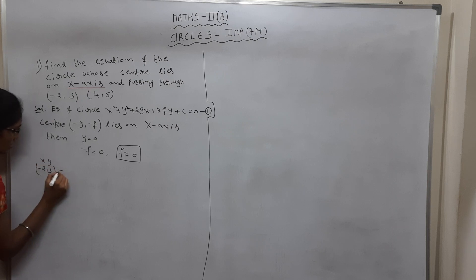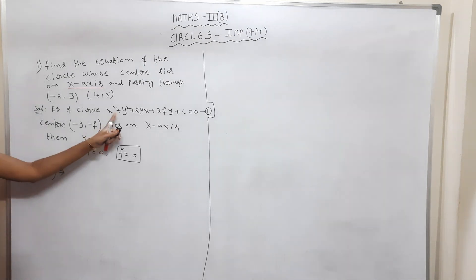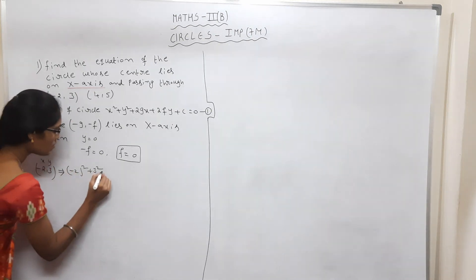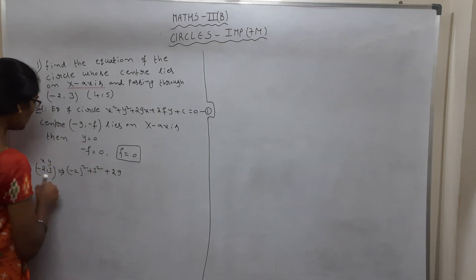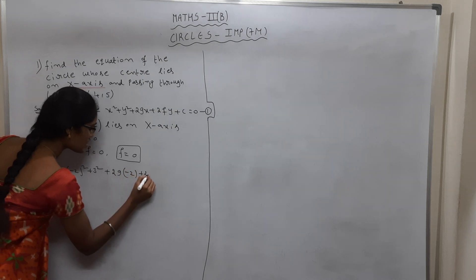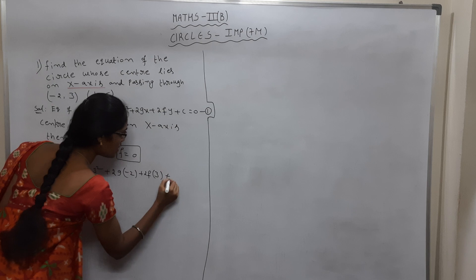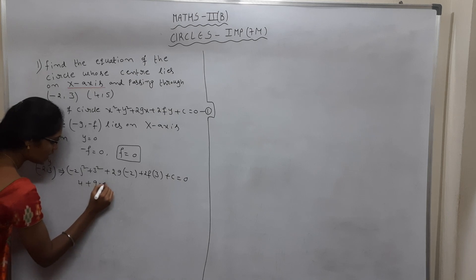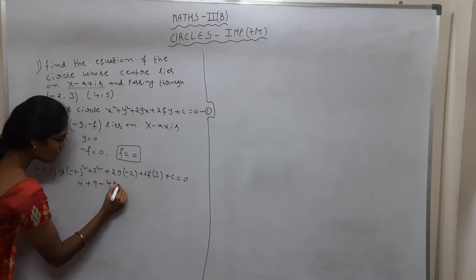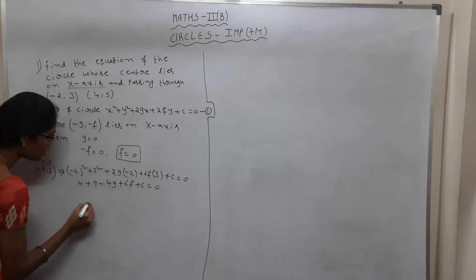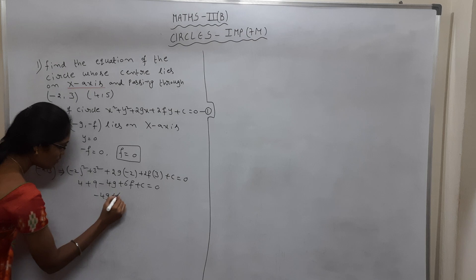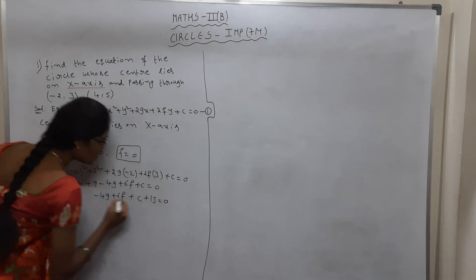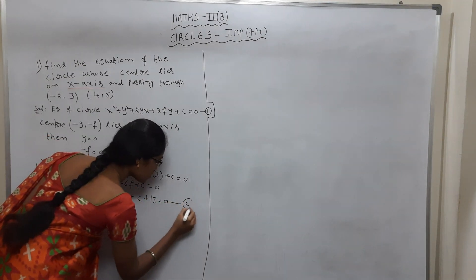Substitute x = -2 and y = 3 into Equation 1: (-2)² + 3² + 2g(-2) + 2f(3) + c = 0, giving 4 + 9 - 4g + 6f + c = 0. Writing in order: -4g + 6f + c + 13 = 0. Consider this Equation 2.